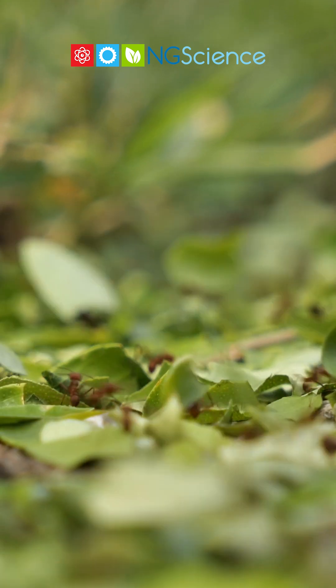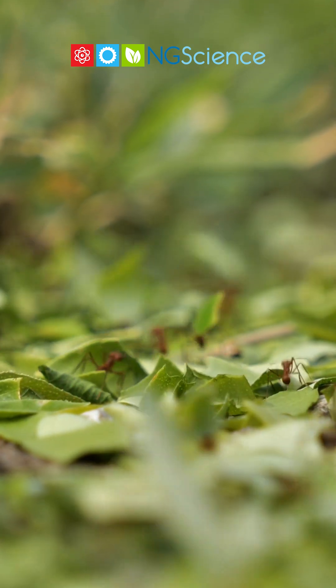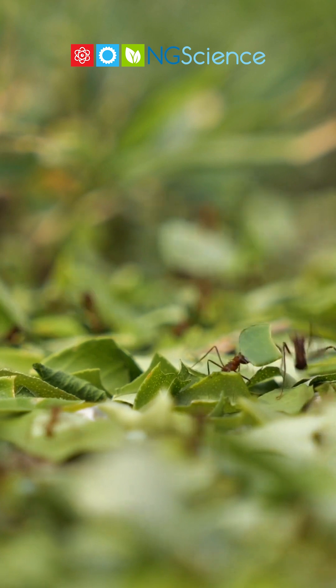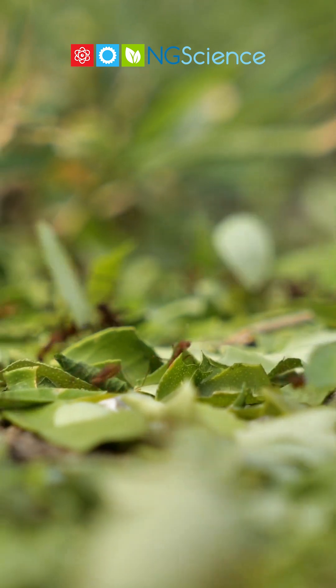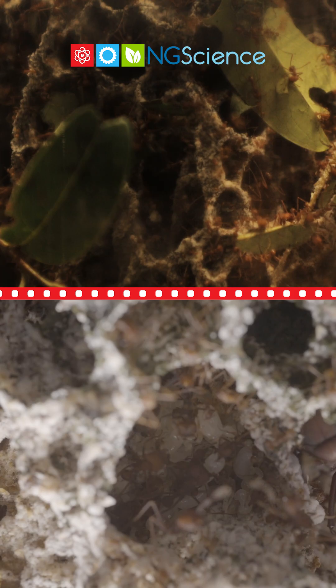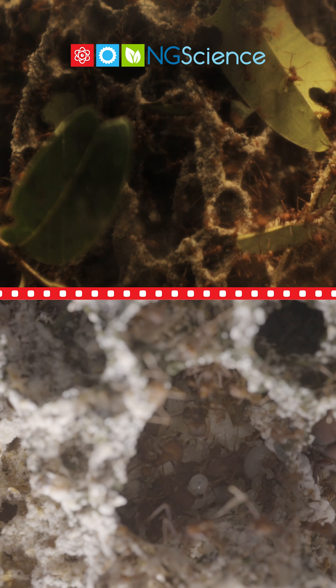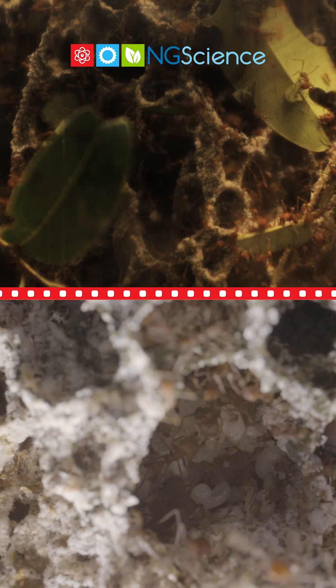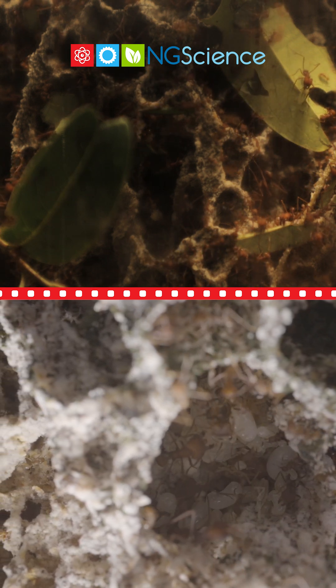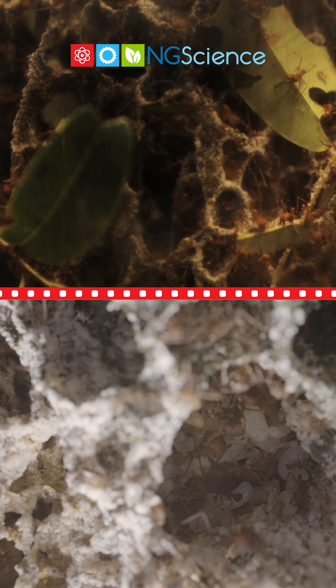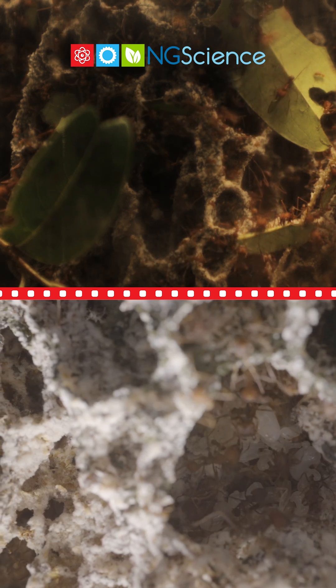These ants use the cut leaves not as food themselves, but as a means to cultivate a special type of fungus, which forms the primary component of their diet. This fungus, which is grown within the depths of their nests, requires the finely chopped leaf matter to thrive. The fungus is their sole source of food and is critical for the survival of the colony.